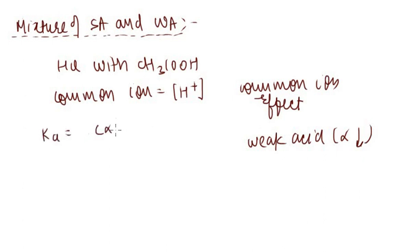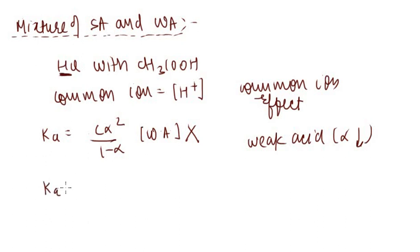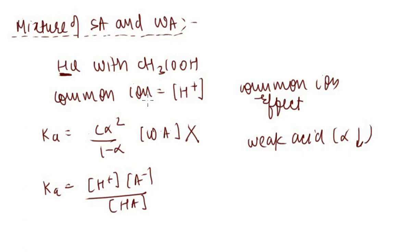We cannot directly write Ka = Cα²/(1−α) for the weak acid, because the H⁺ concentration is not simply Cα — the H⁺ is coming from the strong acid (HCN), not from the weak acid alone. So Ka must be written as [H⁺][A⁻]/[HA].